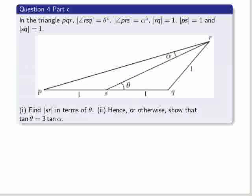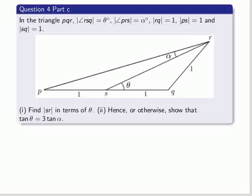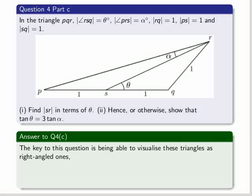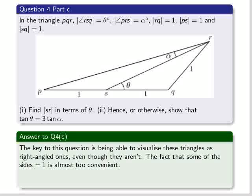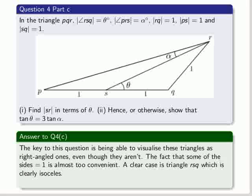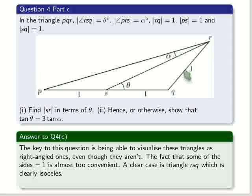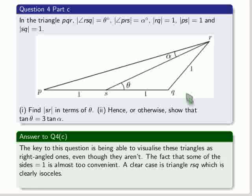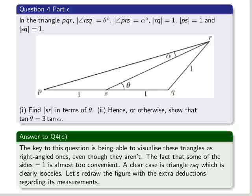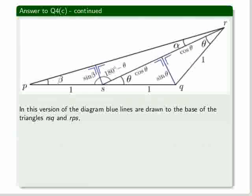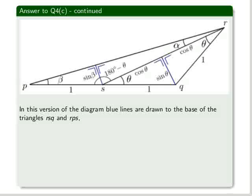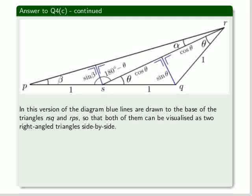So we move on to part C now, and we get that triangle there, and we're given certain values, and we have to find SR in terms of theta, and hence or otherwise show that tan theta equals 3 times tan alpha. The key to this question is being able to visualize these triangles as right-angled ones, even though they aren't. The fact that some of the sides are equal to 1 in the diagram is almost too convenient. A clear case is the triangle RSQ there. RSQ, which is clearly isosceles. Let's redraw the figure with the extra deductions regarding its measurements. Okay, there is the figure redrawn. In this version of the diagram, blue lines are drawn to the base of the triangles RSQ and RPS, so that both of them can be visualized as two right-angled triangles side-by-side.